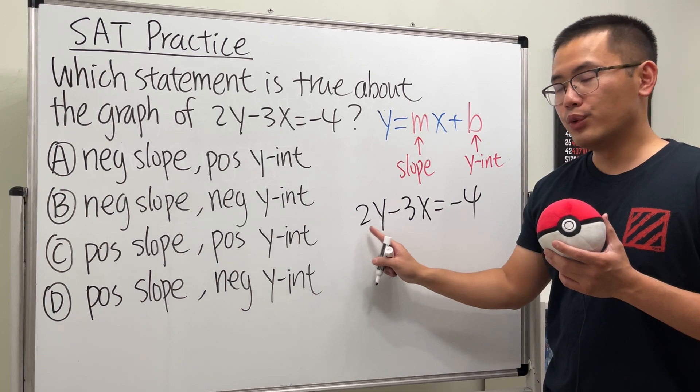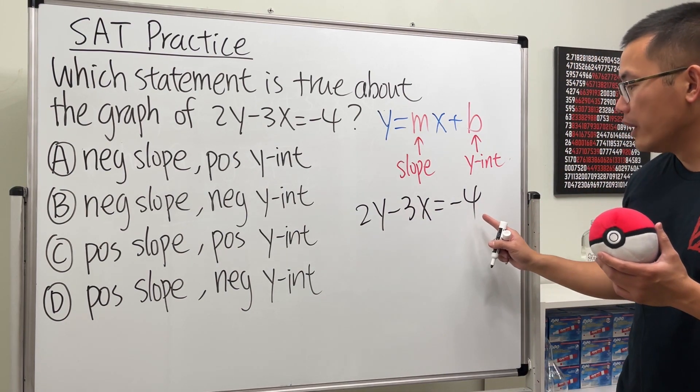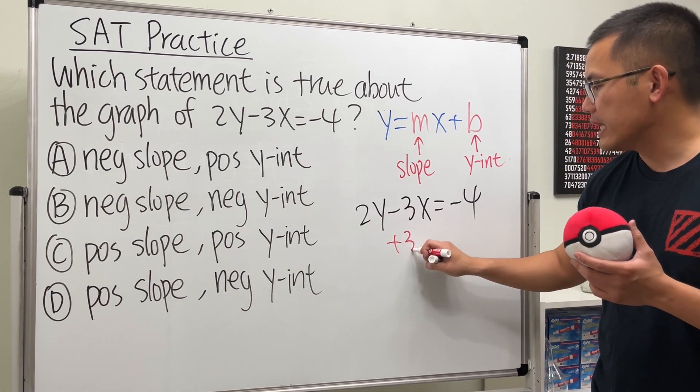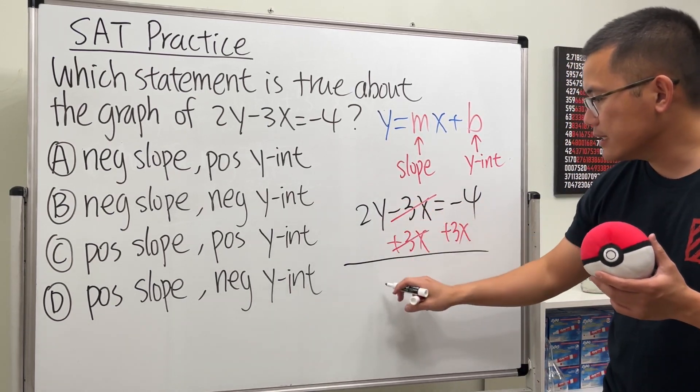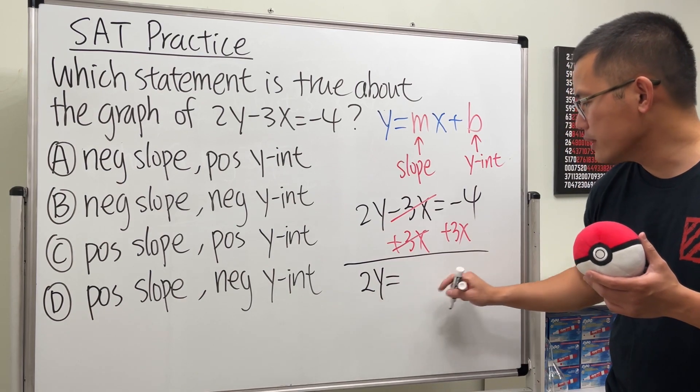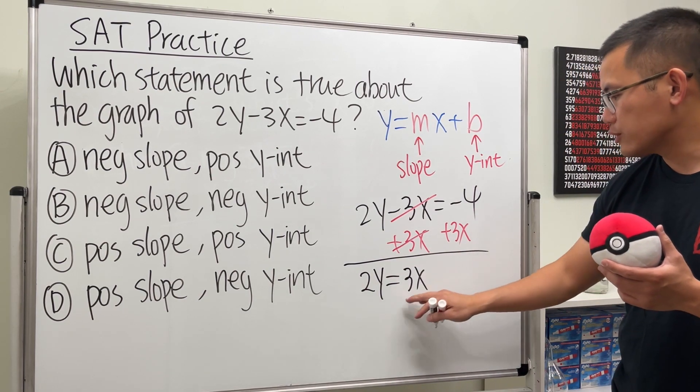2y - 3x = -4. Let's add 3x to both sides. That way this and that will cancel, and we get 2y = 3x. Let's write down the x term first so you can follow this form.